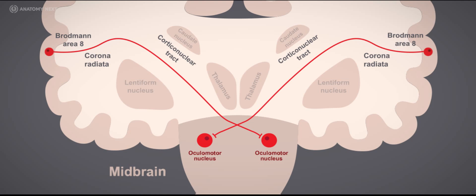The corticonuclear tract then passes through the genu of the internal capsule, a flattened band of white matter located between the lentiform nucleus laterally and the caudate nucleus and thalamus medially. The axons then decussate to the opposite side, and reach the neurons of the oculomotor nuclei and synapse with them.